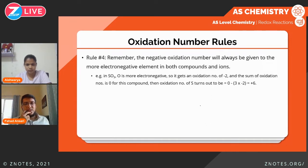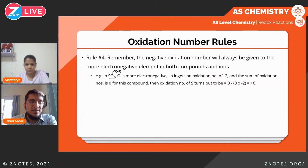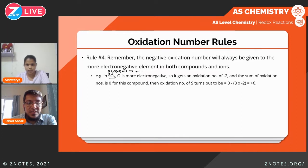Rule four: the negative oxidation number will always be given to the more electronegative element. For example, in SO₃, oxygen is more electronegative so it gets minus two; three oxygens give minus six, and sulfur is x, so x + (−6) = 0, making sulfur plus six.